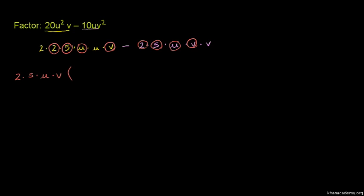We can factor this out. After taking out 10uv from the first term 20u squared v, we're left with 2u. From the second term 10uv squared, we're left with v.